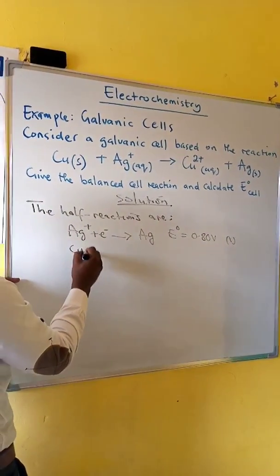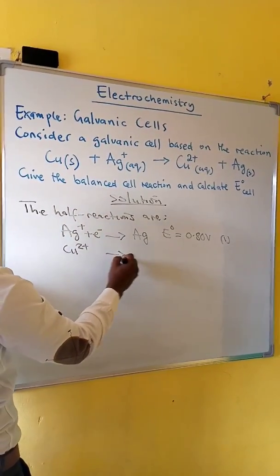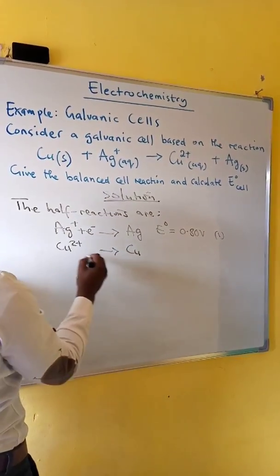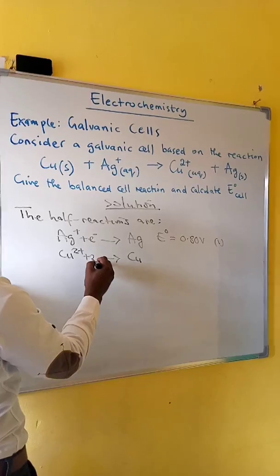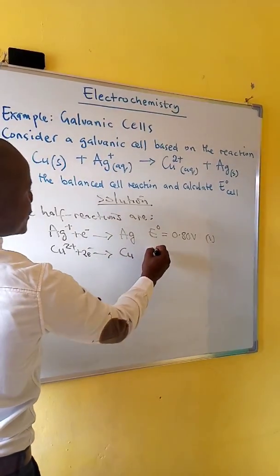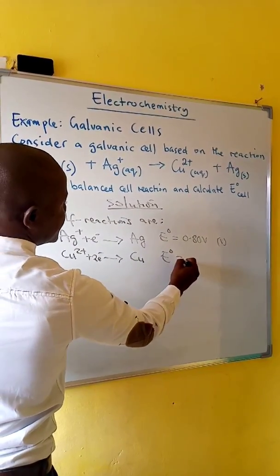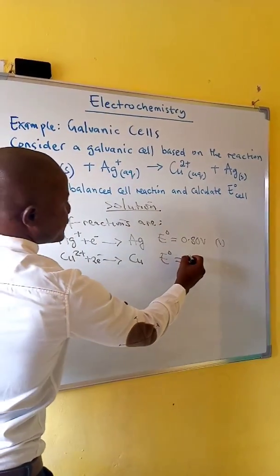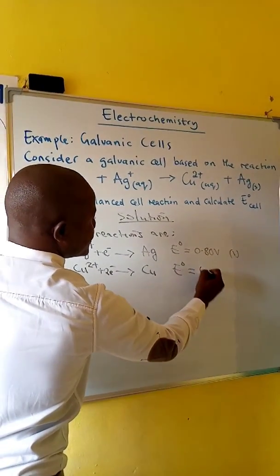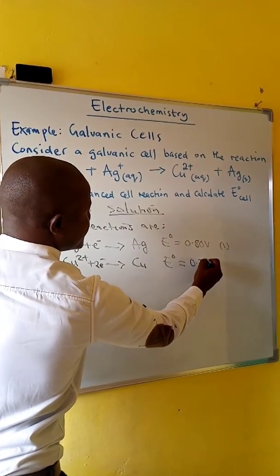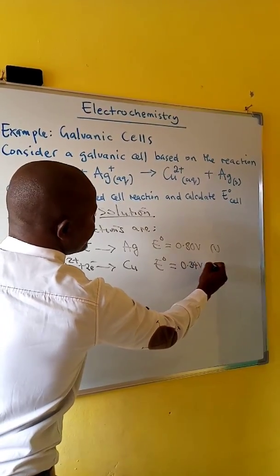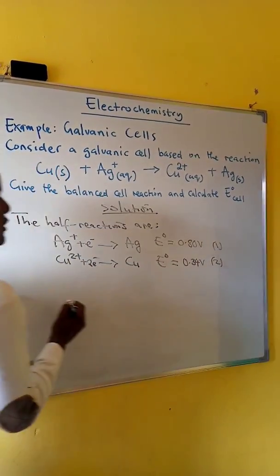Copper 2 forms copper. Balance the charge. Two electrons. Potential for this reaction is 0.34 volts. This is our reaction 2.